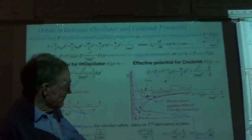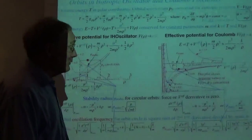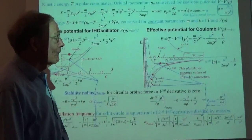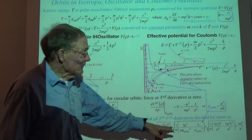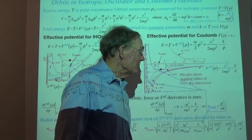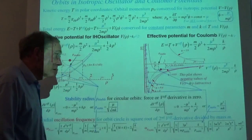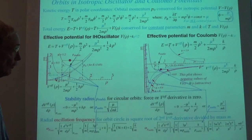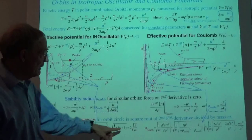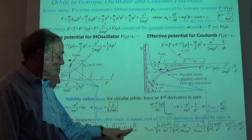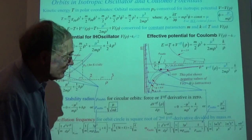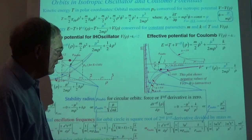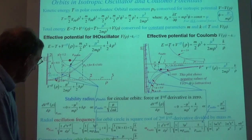We go ahead and calculate the second derivative just like we were doing a problem with no symmetry. A little bit of algebra gives a frequency of mk²/μ³. That's to be compared with just k/m. That doesn't seem to show much connection — but we'll see it later on. It does.